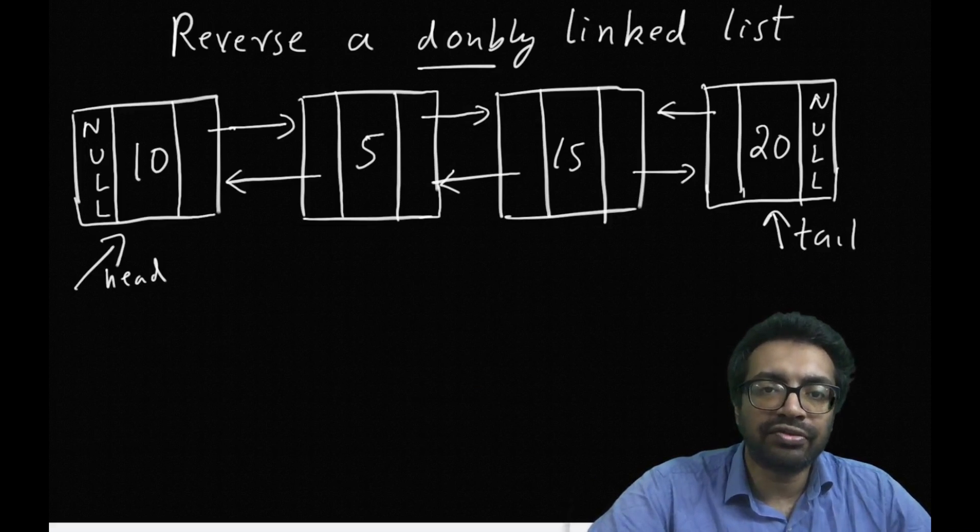Can we write a function which can reverse a doubly linked list? That is what we are going to look at now. As you can see, we will explain it with an example. There is a doubly linked list here with the numbers 10, 5, 15, 20 in that order and I want to reverse it into 20, 15, 5, 10. How am I going to do it?